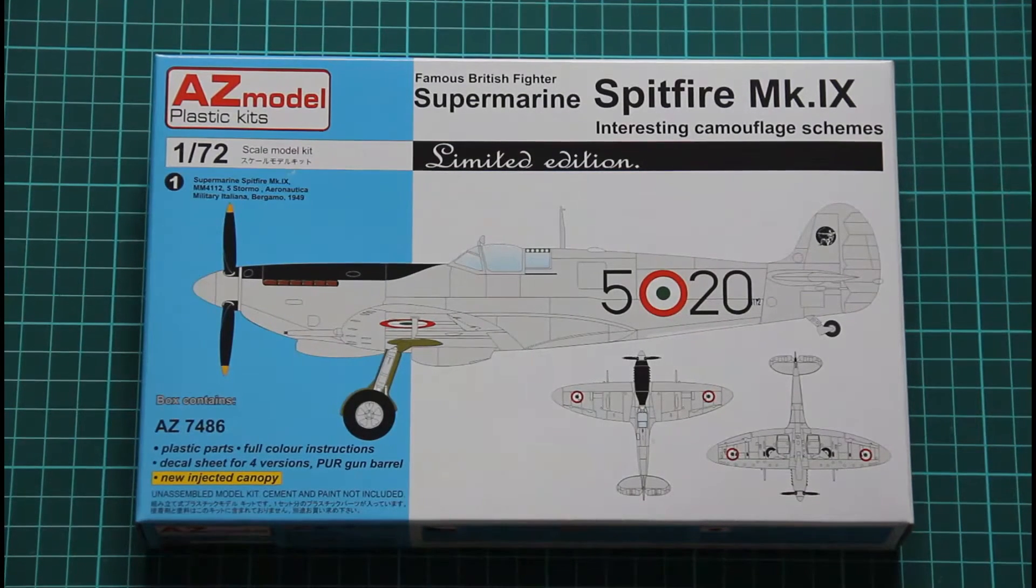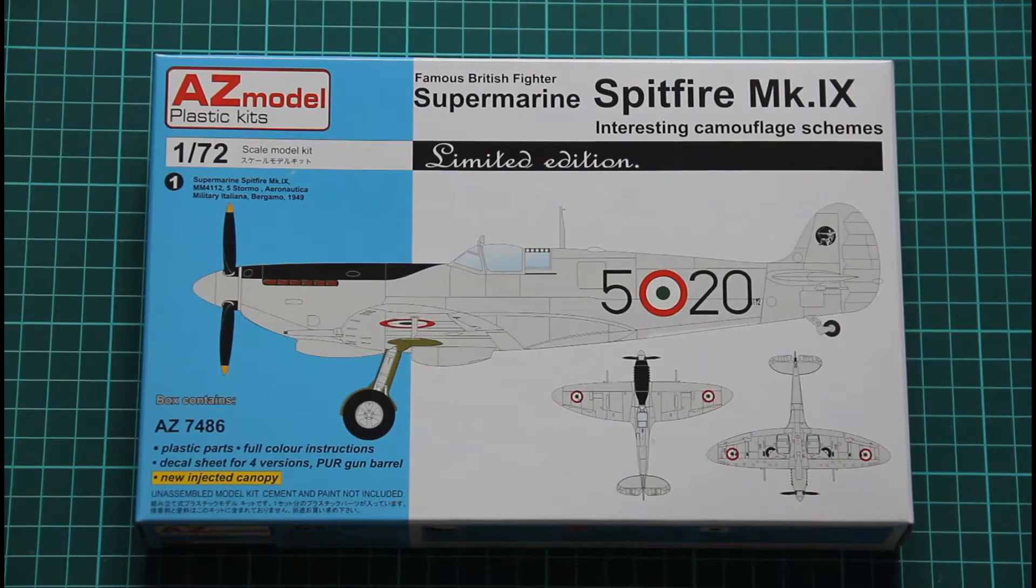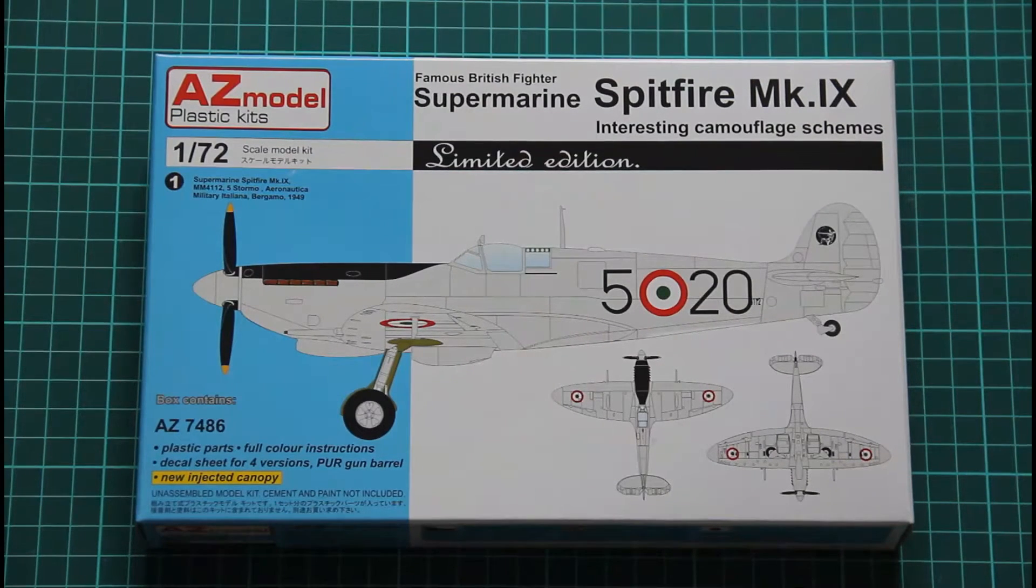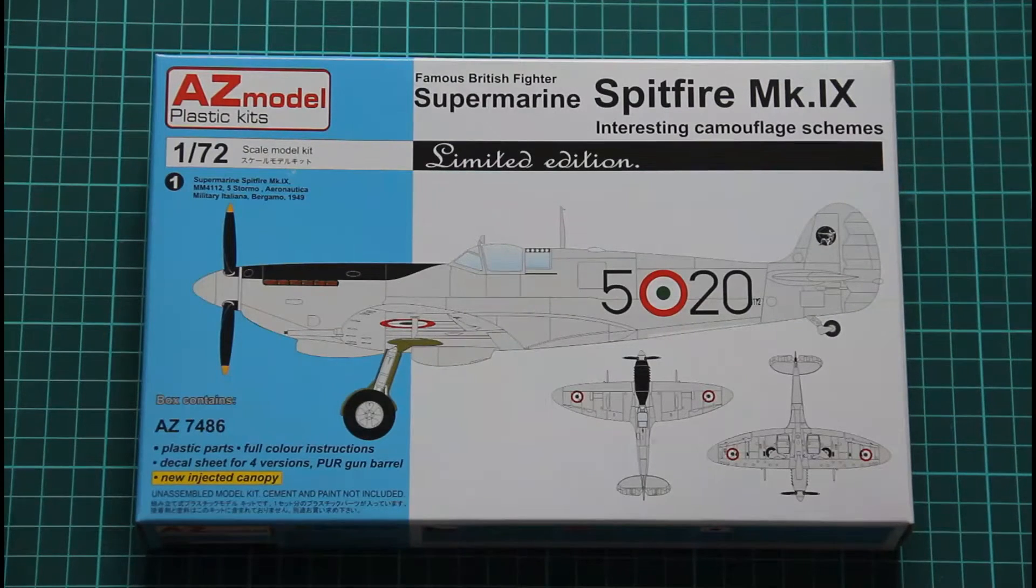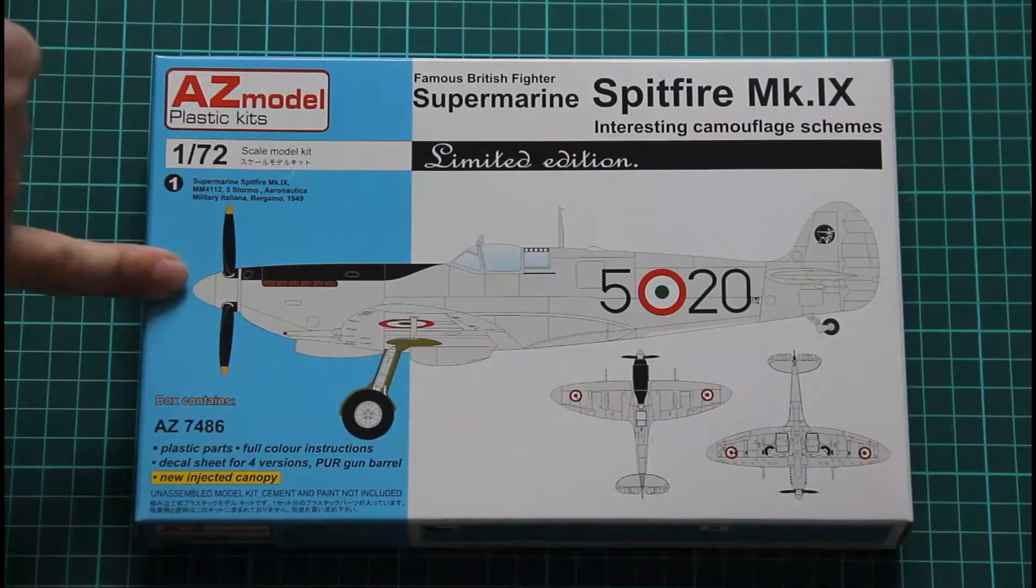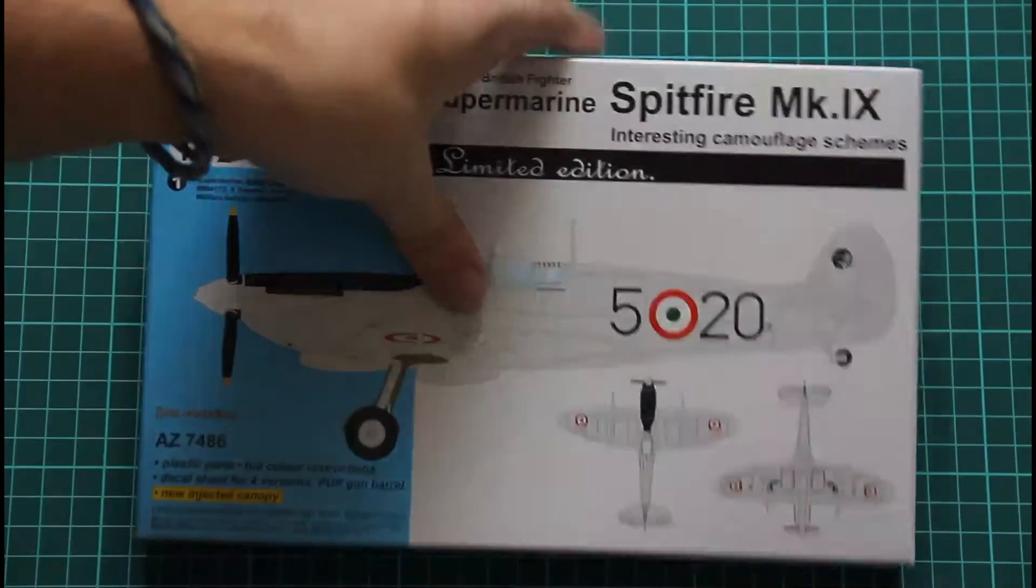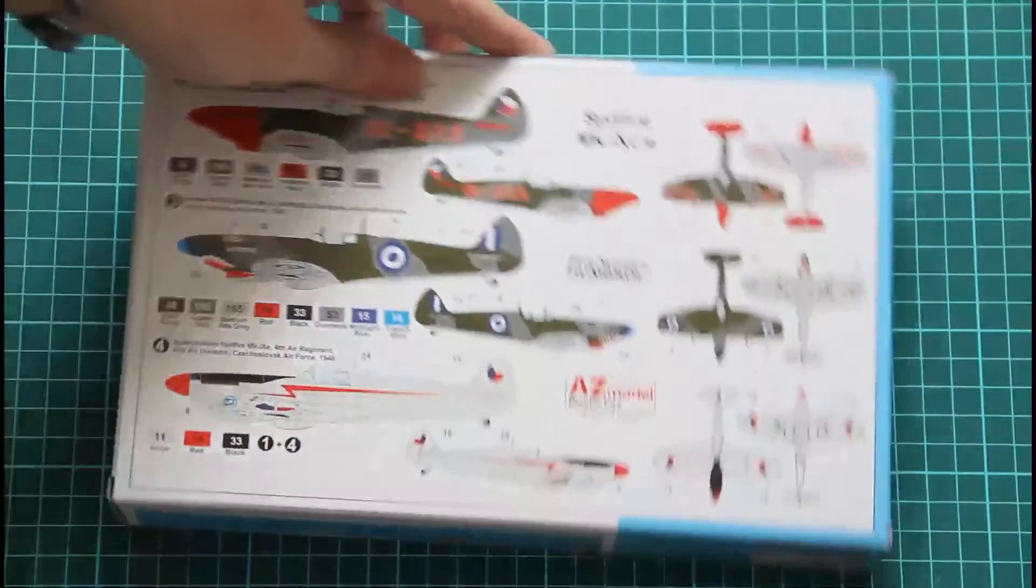It features special camos. There are four different versions of the Spitfire. That's still a 72nd scale model kit, and you can see the first interesting marking option on the front side, and here are three others.